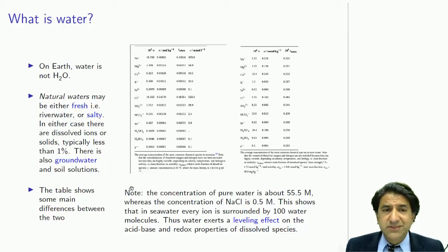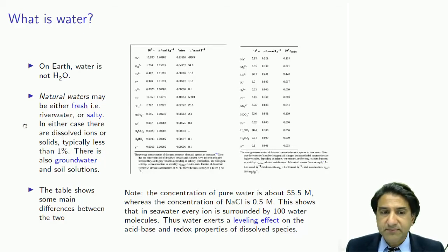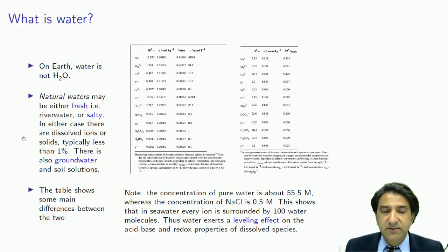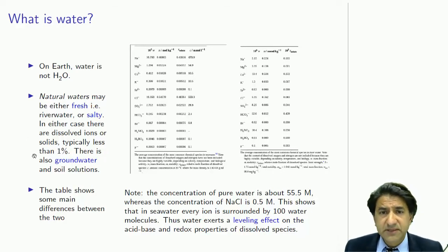So let's have a look at the different kinds of water there are. There are basically two kinds of water, and we call them both natural waters. Natural waters may be either fresh (i.e. river water) or they may be salty (i.e. seawater). In either case, there are dissolved ions in the water, or perhaps dissolved solids — and that's very important. It's not just pure water, but typically those dissolved ions and materials are less than 1% of the material. There's also groundwater and soil solutions, which tend to have slightly different compositions, because of the lack of oxygen in groundwater.